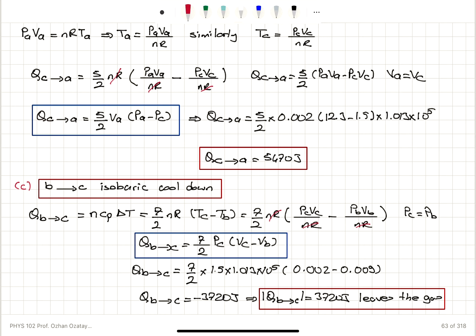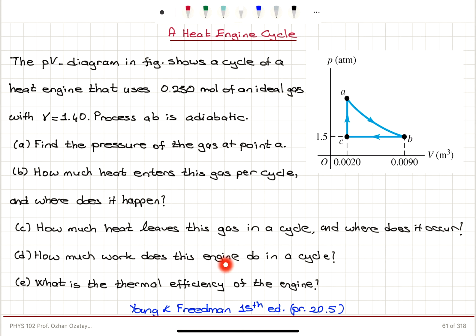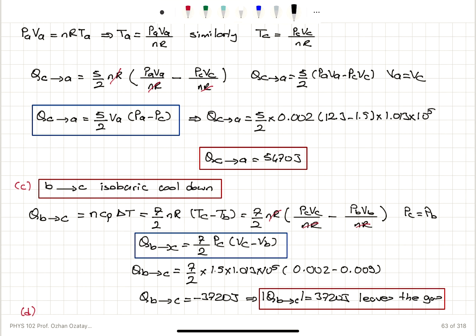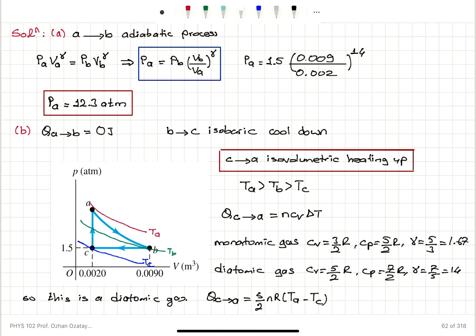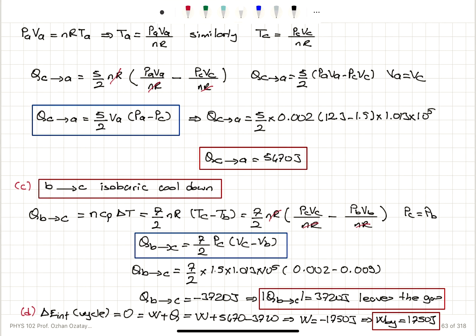Let's go to Part D. Part D asks how much work does this engine do in a cycle. I have calculated all the heats, and I know that the internal energy change over a cycle is zero because internal energy is a state variable. Therefore, work done on the gas plus heat added to the gas equals zero: W + (5,470 − 3,720) = 0, giving work done on the gas = −1,750 joules, or work done by the gas = 1,750 joules. Following the right-hand rule, curling fingers in the direction of the process, the thumb points into the board, confirming work is done by the gas — so this is indeed a heat engine.